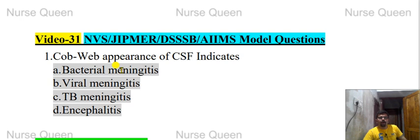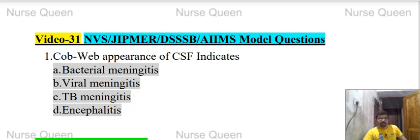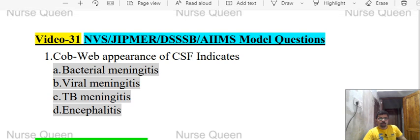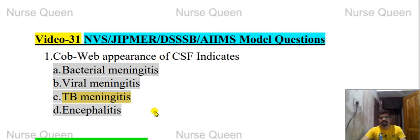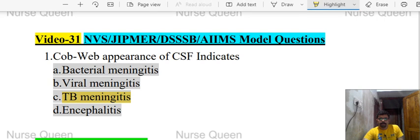First question: Cobweb appearance of CSF indicates — options: bacterial meningitis, viral meningitis, TB meningitis, or encephalitis. The correct answer is TB meningitis. Cobweb appearance of CSF on standing indicates TB meningitis.